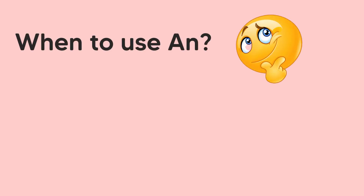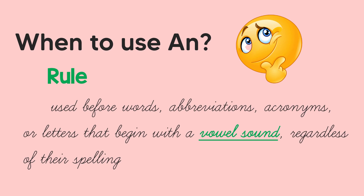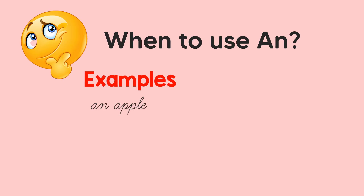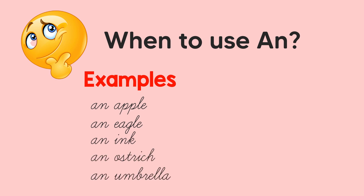When do we use AN? AN is used before words, abbreviations, acronyms, or letters that begin with a vowel sound, regardless of their spelling. What are vowel sounds? Vowel sounds are the sounds of vowel letters: A, E, I, O, and U. For example: an apple, an eagle, an ink, an ostrich, an umbrella. They all begin with a vowel sound — A, E, I, O, U.